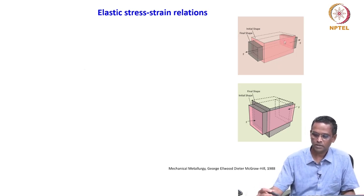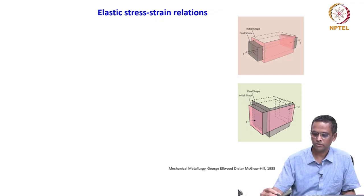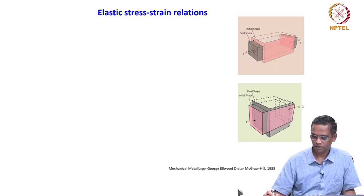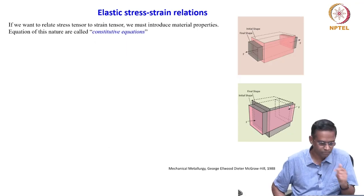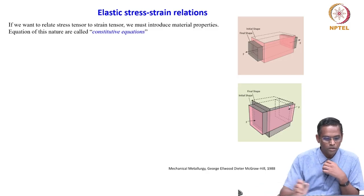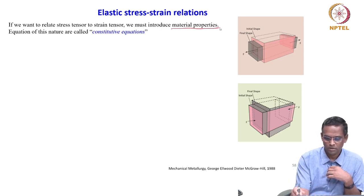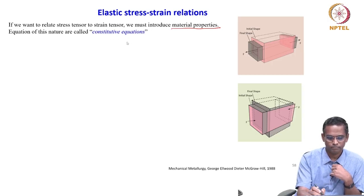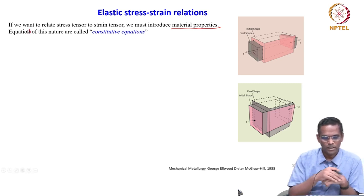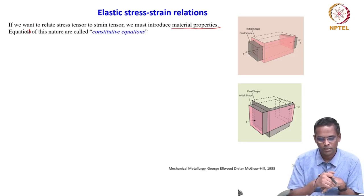When we say elastic deformation, it can be compression as well as tension. This is an initial shape of the member body being subjected to tensile deformation — the length increases, the width decreases. Similarly, when a member is subjected to compression, the length decreases and the height increases. To relate a stress tensor to the strain tensor, we must introduce material properties. Equations of this nature are called constitutive relations or constitutive equations.